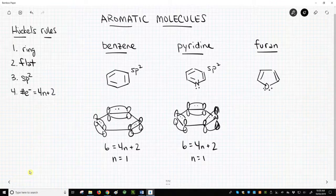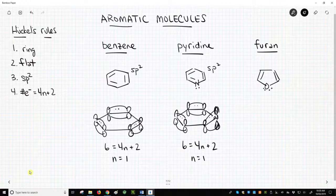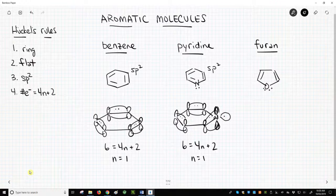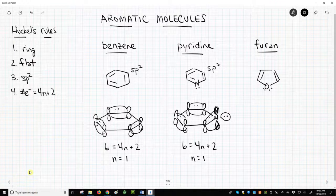The p orbital cannot also hold a lone pair. Okay, so what is holding the lone pair? It's an sp2 hybrid. The lone pair is sticking perpendicular off the side of the molecule, perpendicular to the p orbitals that are determining aromaticity.